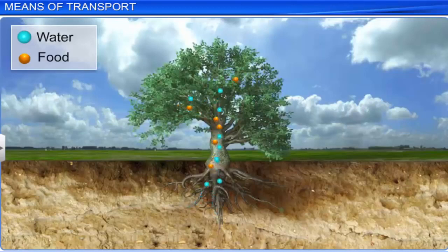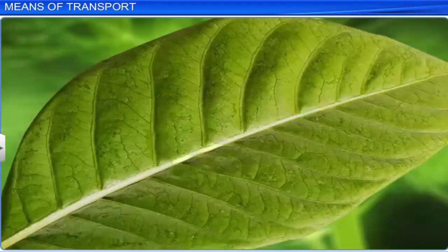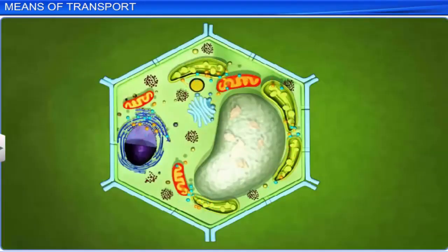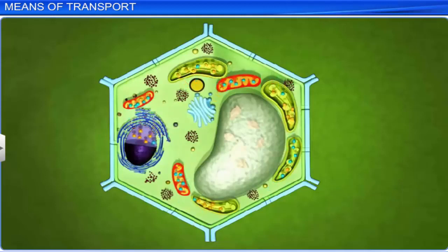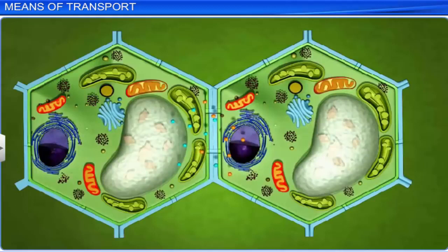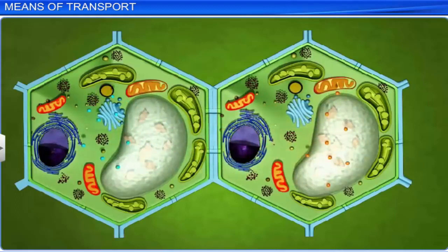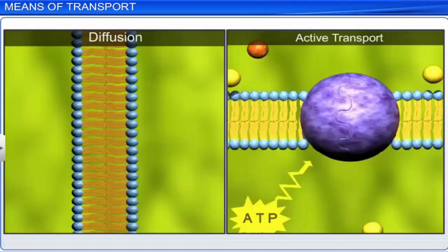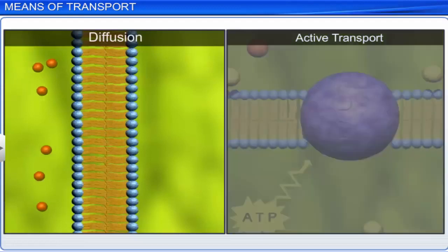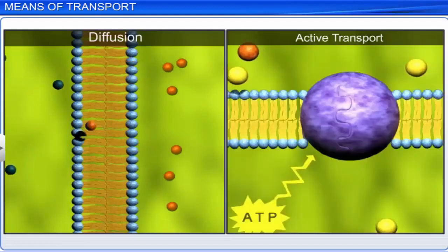Food and water move across large distances in plants. However, the movement of food and water also takes place across short distances — that is, within a cell or from one cell to another. This movement of food and water across short distances takes place either passively by diffusion or by active transport.